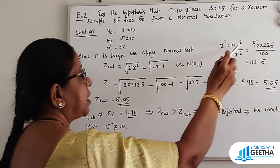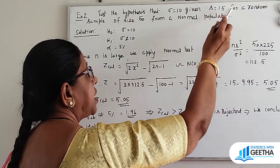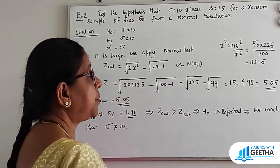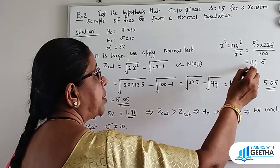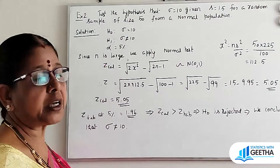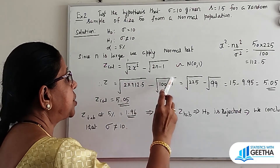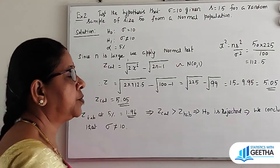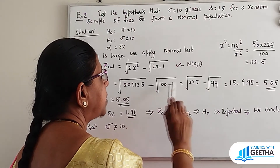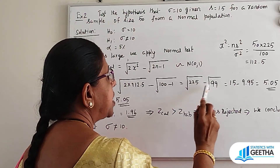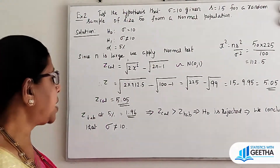We first calculate chi-square using the formula n S square by sigma square. N is 50, s is 15 so s square is 225, sigma is 10 so sigma square is 100. Chi-square equals 50 times 225 divided by 100, which equals 112.5. Then Z calculated equals root of 2 times 112.5 minus root of 2 times 50 minus 1, which is root of 225 minus root of 99, equal to 15 minus 9.95, giving Z calculated value of 5.05.